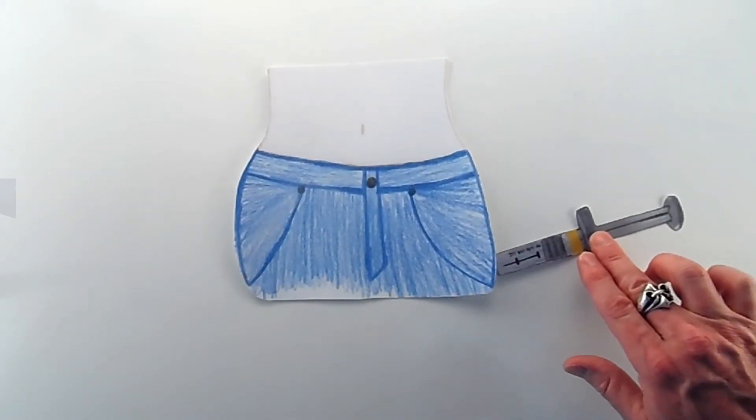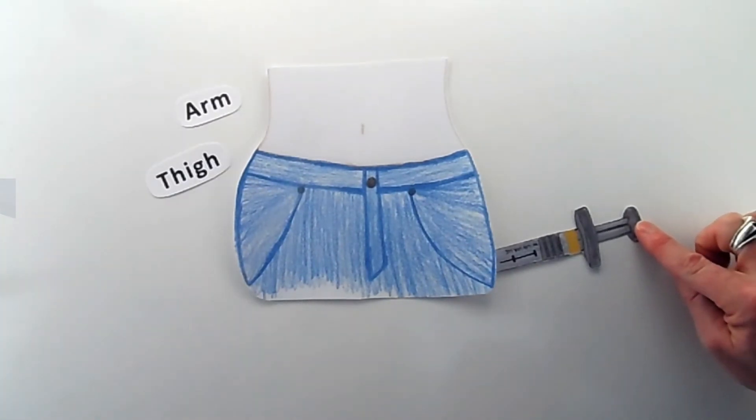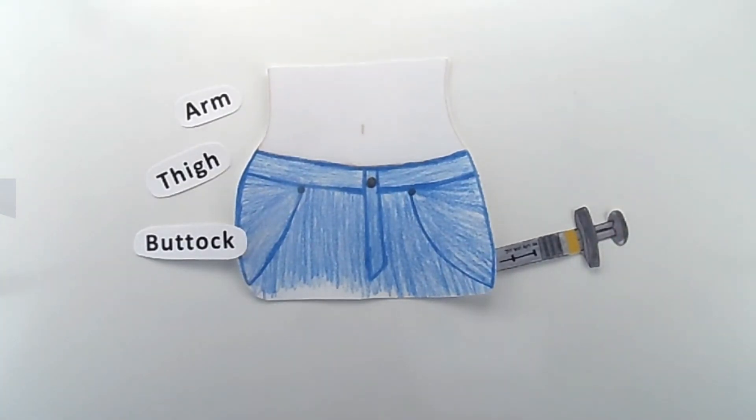Inject the glucagon as quick as possible. The best spots are the arm, thigh, or buttock. At this point, it's important to know that glucagon is not harmful.